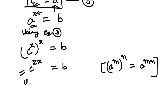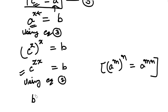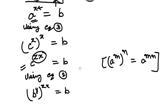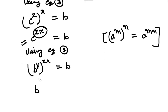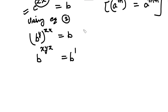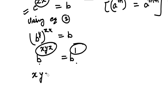Using equation 2, C equals B raised to the power Y. Substituting, and keeping the whole power as it is, again using the power law: B raised to the power XYZ equals B raised to the power 1. Now on comparing, since the bases are the same, the indices must also be equal. Therefore XYZ equals 1, which is what we had to prove.